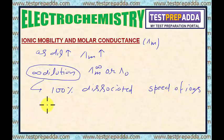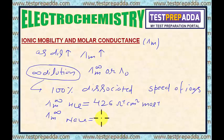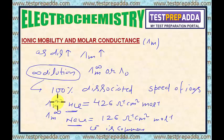The molar conductance at infinite dilution for HCl is about 426 ohm⁻¹ cm² mol⁻¹, while for NaCl it is about 126 ohm⁻¹ cm² mol⁻¹. Comparing these two electrolytes, Cl⁻ is common, so the difference in molar conductance values at infinite dilution is not decided by Cl⁻.